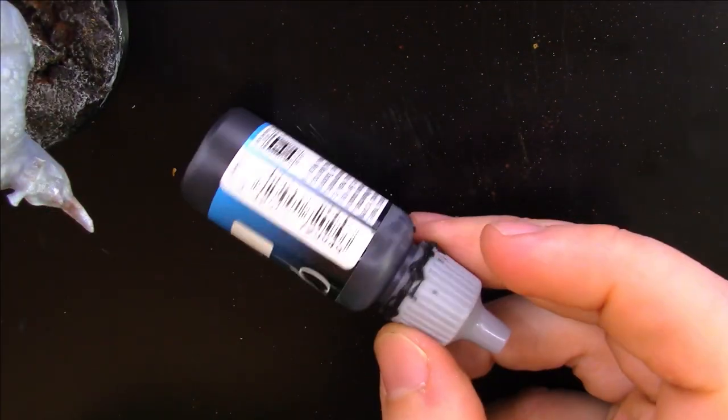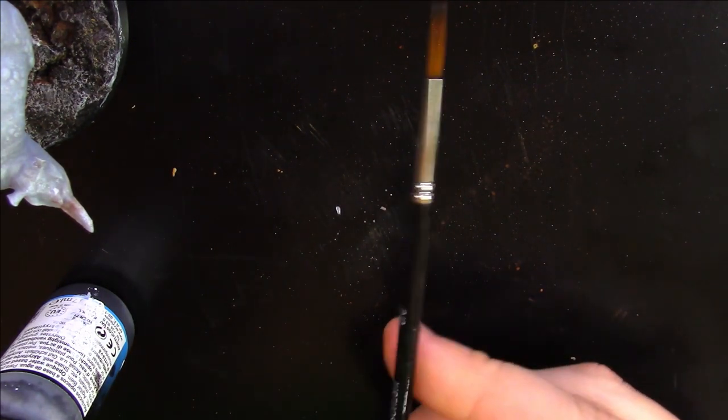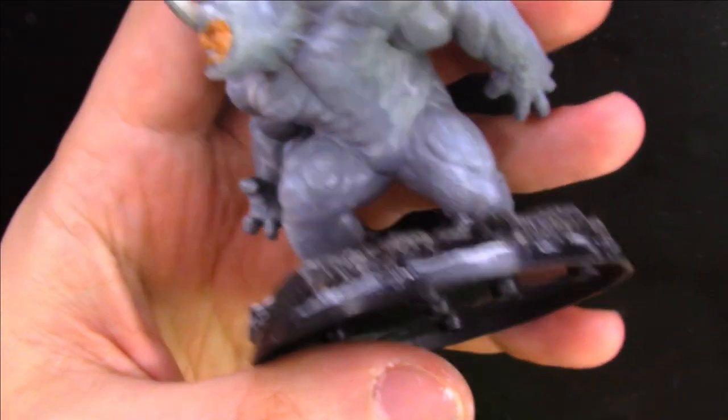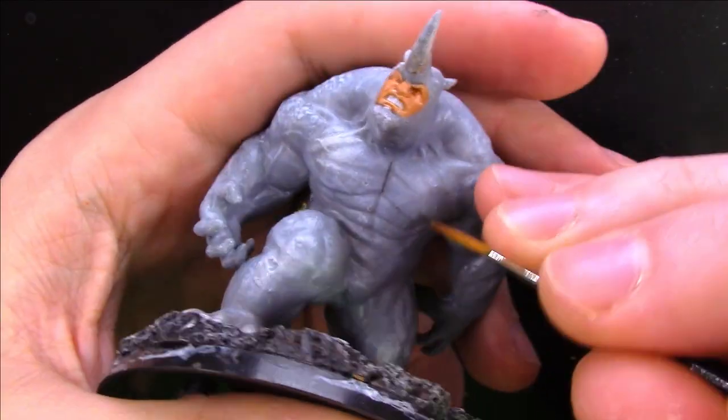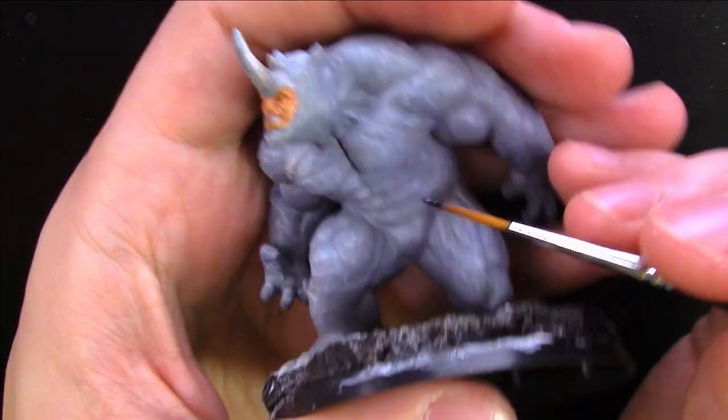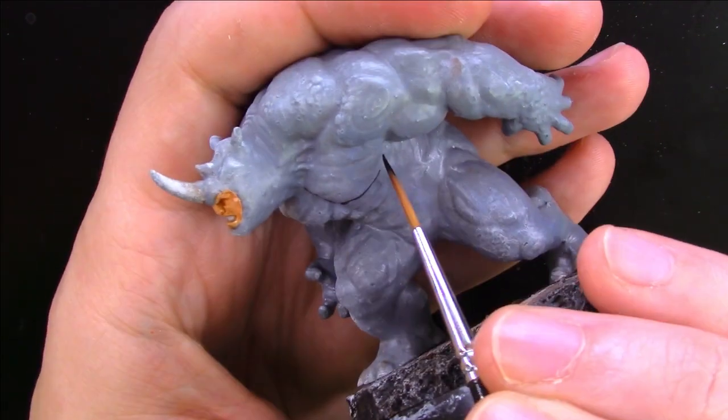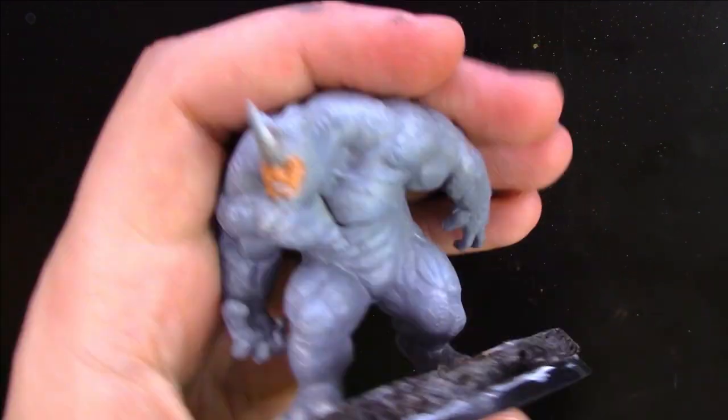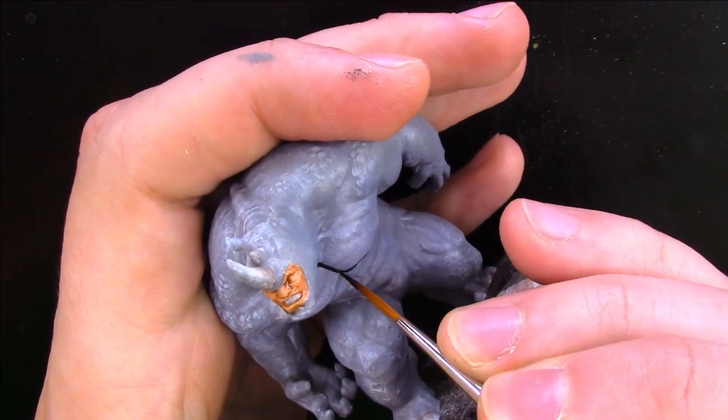For inking you need two things: a nice long bristled liner brush and ink. I like the Vallejo game ink but you can use anything that you want. Now this process took the longest by far but can also be the most gratifying. I start at the chest and do nice long lines around the crevices.